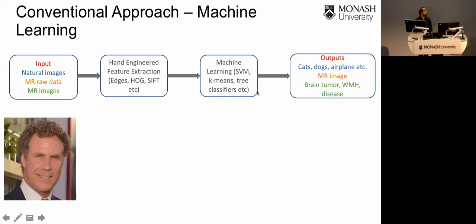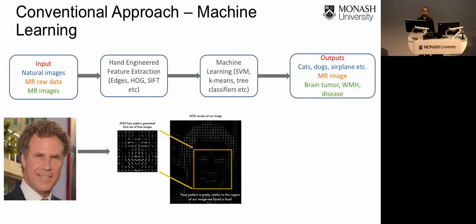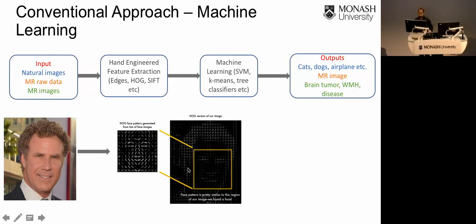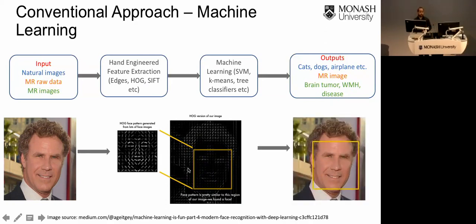As an example of hand-engineered features: if you want to detect the location of a face in an image, you can use the HOG transform (Histogram of Oriented Edges). Taking a HOG transform of a face image produces a distinctive representation. Using millions of face images, researchers have created a HOG template for faces. When a new image comes in, you take its HOG transform, look for the template with code, and finally detect the faces. This illustrates how expert domain knowledge is required to solve these problems with conventional approaches.